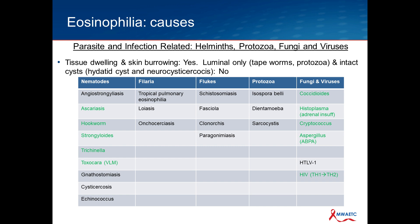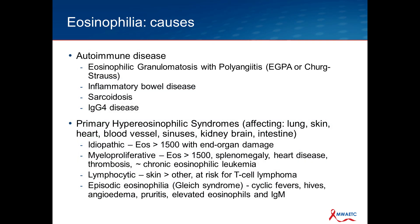Among the fungi, coccidioidomycosis is associated with eosinophilia for reasons that are poorly understood — much more so than histoplasma or cryptococcus. The latter two can cause eosinophilia, but usually in the setting of disseminated infection when you might knock off the adrenals, and adrenal insufficiency is probably the cause of eosinophilia in those infections. ABPA was already mentioned, and HIV itself may also be responsible for eosinophilia.